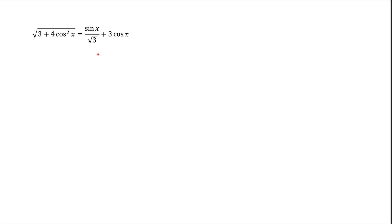Today we'll be solving this trigonometric equation. First of all, since we're looking for a solution among real numbers and we see a square root on the left, we want to make sure that whatever is under the square root is non-negative. We can see that this is satisfied for any x, because we have cosine squared, which is non-negative, plus 3, which makes whatever is under the square root no less than 3. So that part is satisfied.